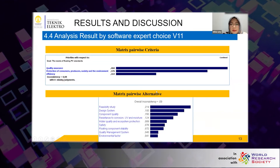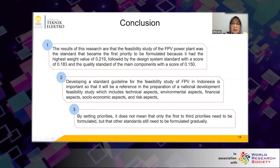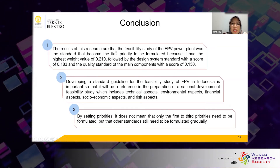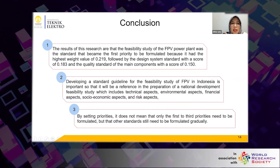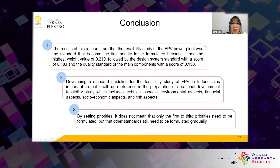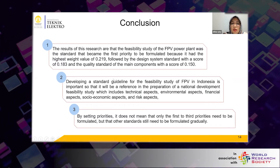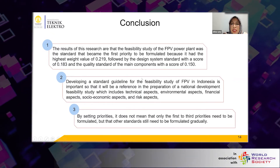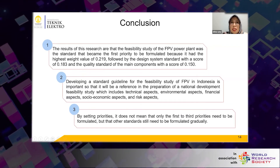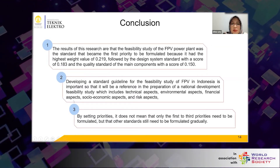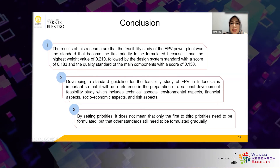In conclusion, the feasibility study standard for FPV becomes the first priority to be formulated because it had the highest weight value, followed by the design system standard and the quality standard of the main components with a score of 0.150. In this context, it is important for the government to develop the standard for the feasibility study of FPV in Indonesia, so that it will serve as a reference in national development feasibility study preparation, covering technical, environmental, financial, socioeconomic, and risk aspects. By setting priorities, it does not mean that only the first to third priorities need to be formulated; other standards still need to be formulated gradually.